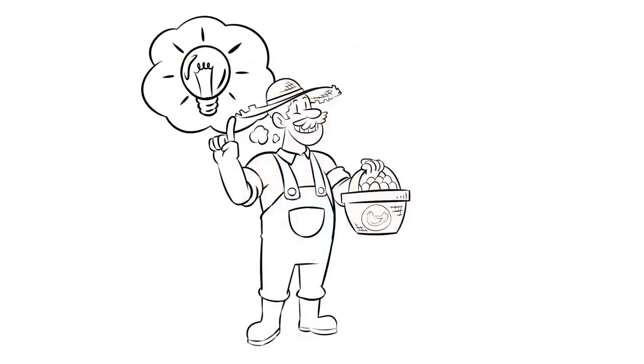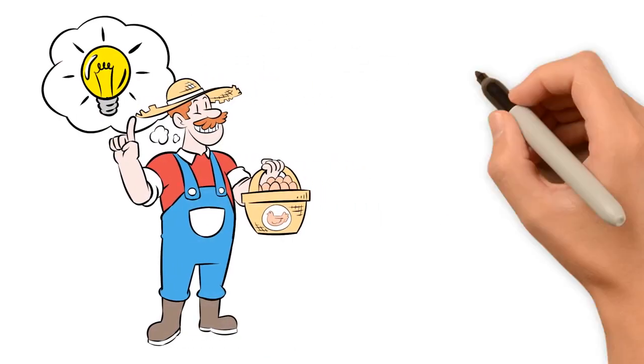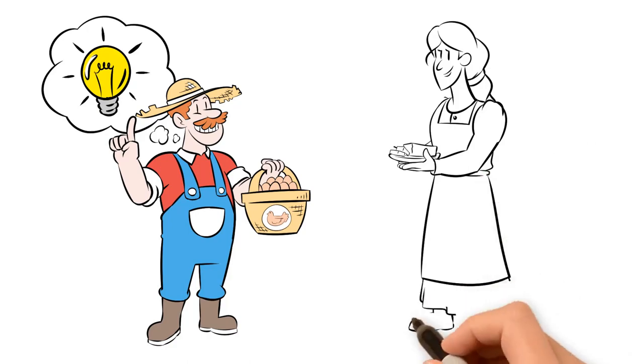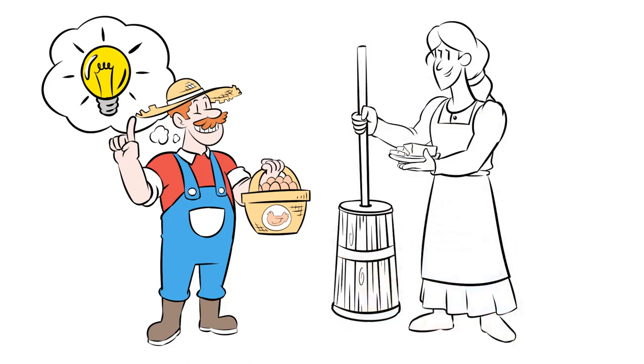But man adapted. Consider our farmer. Instead of offering eggs, he finds what the cobbler really wants: butter. Butter is now exchanged for shoes.